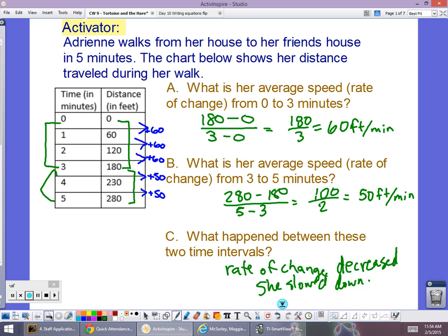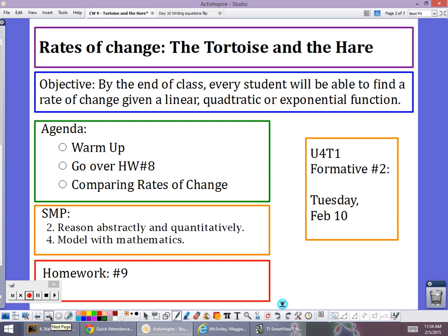So our plan for today is this. By the end of class, every student will be able to find the rate of change given a linear, quadratic, or exponential function. Same thing as yesterday. Homework nine tonight I think is a graded homework, meaning it's a quiz grade. So we need to be very careful when we're doing our homework tonight. We really want to think about it and make sure that we're doing it carefully. Our quiz is next Tuesday. That one is not retakable.